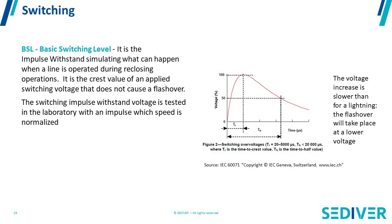Switching is a parameter that is not important at low voltage lines. For example, for a distribution line at 24 kV or a line at 110 kV, you don't need to worry about switching — the dominant parameter is lightning. Above 345 kV, lines are designed with switching impulse more than lightning impulse, because switching will occur at a lower value than the lightning impulse for a relatively long string — typically 345 kV and above.